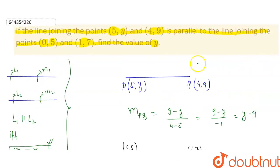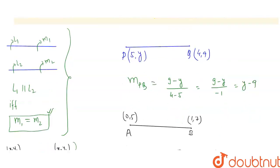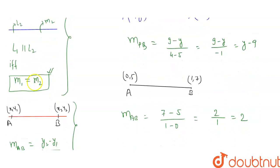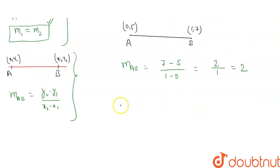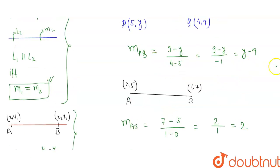And the question is saying these two lines are parallel. If these lines are parallel, then their slopes will be equal according to this concept. It means slope of PQ will be equal to slope of AB.